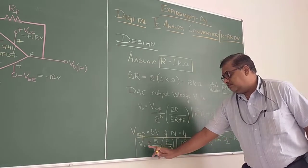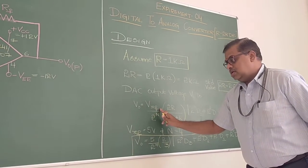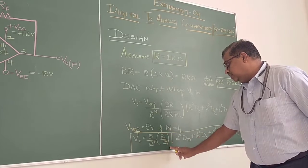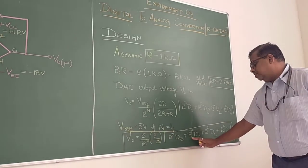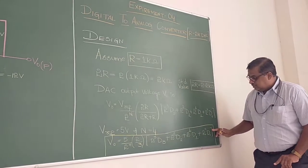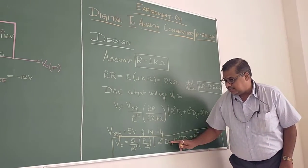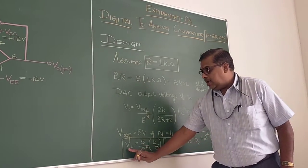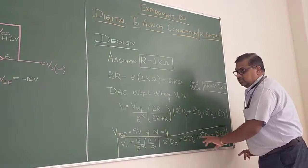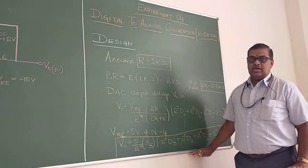Now I will substitute here. 2R by 2R plus R becomes 2R by 3R, R will get cancelled, it will become 2 by 3. Therefore the final equation would be V0 is equal to 5 divided by 2 power 4 into 2 by 3 times 2 power 3 D3, 2 power 2 D2, 2 power 1 D1 and 2 power 0 D0. The 5 represents the V reference. Now if I substitute the digital values D0, D1, D2 and D3, and using this equation if I simplify, I will get analog output. This is what the experiment is, we are substituting the digital inputs in the form of zeros and ones and we are getting analog output.